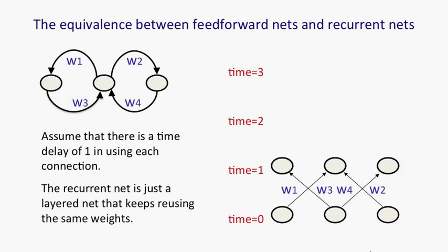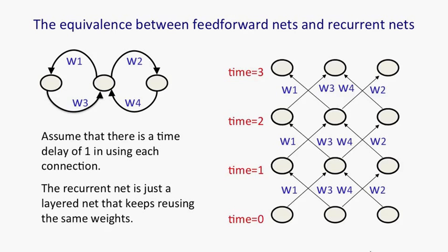It then uses the same weights again to get another new state, and it uses the same weights again to get another new state, and so on. So it's really just a layered feedforward network where the weights are constrained to be the same at every layer.